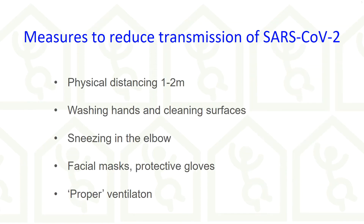To reduce direct transmission of SARS-CoV-2 from an infected person, physical distancing has been adopted. For indirect transmission: cleaning services, washing hands, and sneezing or coughing into the elbow. And for people who need to or tend to come close to possibly infected persons, personal protective equipment is used, such as facial masks and protective gloves.